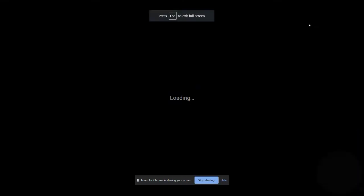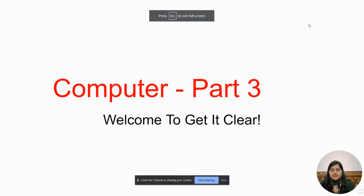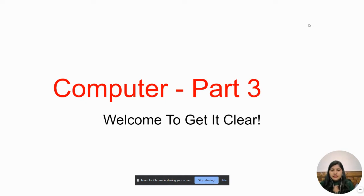Hello friends, welcome to my channel Get It Clear. In the previous part, I studied computer history Part 2, the middle age, in which we studied two machines: the Herman Hollerith Tabulating Machine and the other was ABC, the Atanasoff-Berry Computer.